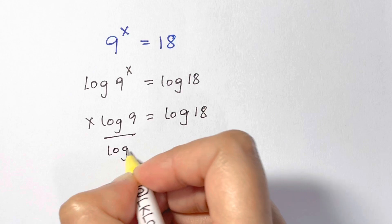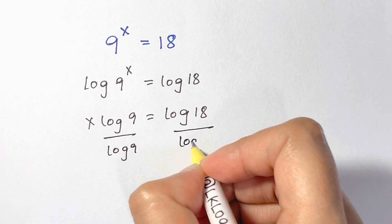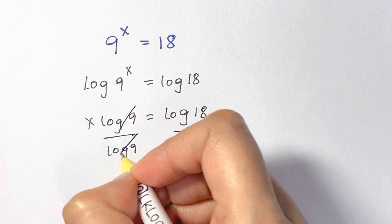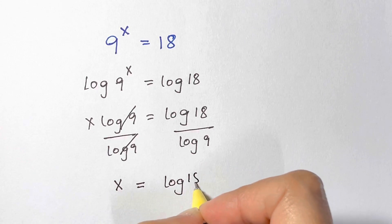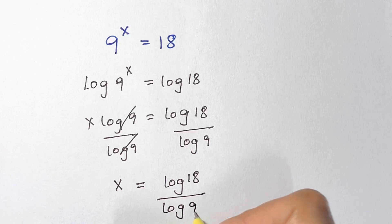Divide both sides by log 9. So we have log 9, log 9 gets cancelled. So we're left with x equals log 18 over log 9.